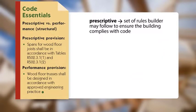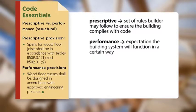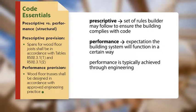Prescriptive means a set of rules the builder may follow to ensure that the building complies with the code. Performance means an expectation that the building system will function in a certain way to meet the minimum requirements of the code. In terms of the structural requirements, performance is typically achieved through engineering.